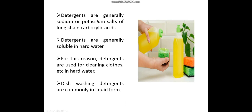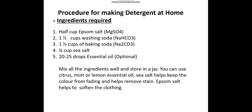Yaad rakho: detergents are generally sodium or potassium salts of long chain carboxylic acids. Detergent banane ke liye ghar pe ingredients: half cup Epsom salt (MgSO4, magnesium sulfate), one and a half cup washing soda (sodium bicarbonate), one and a half cup baking soda (Na2CO3, sodium carbonate), one-fourth cup sea salt, aur 20 to 25 drops essential oil — jo optional hai, fragrance ke liye use kar sakte hain.